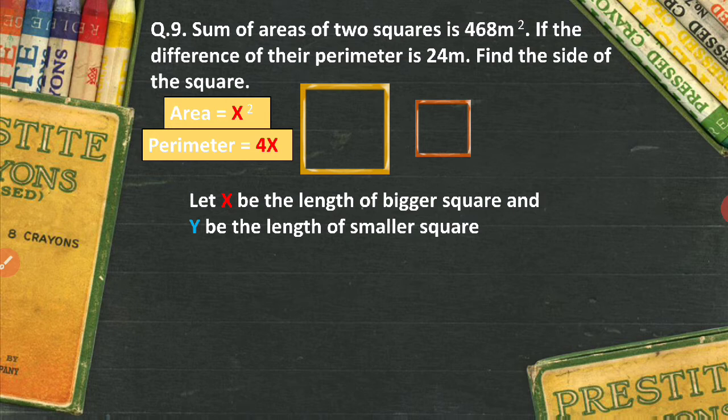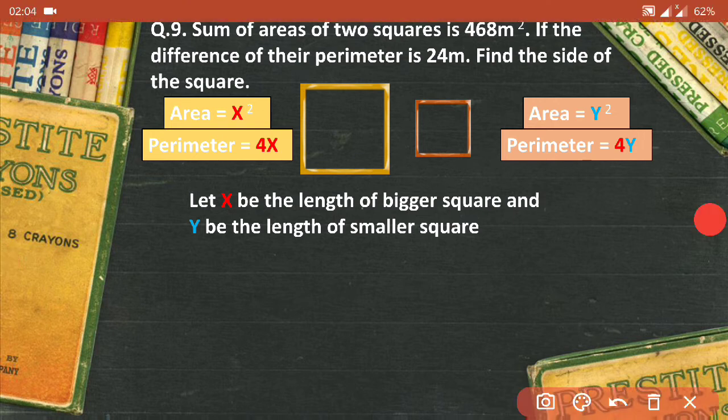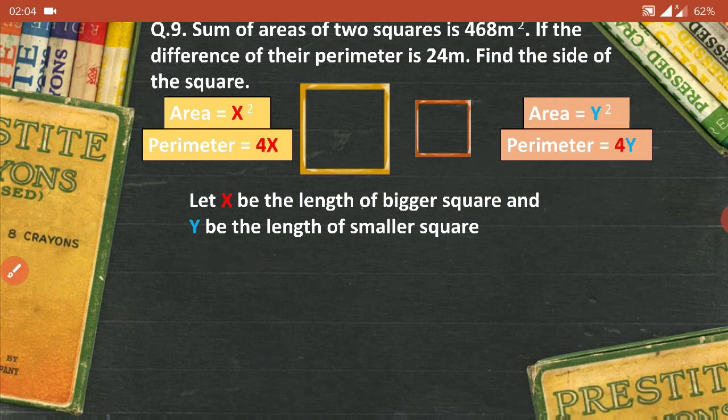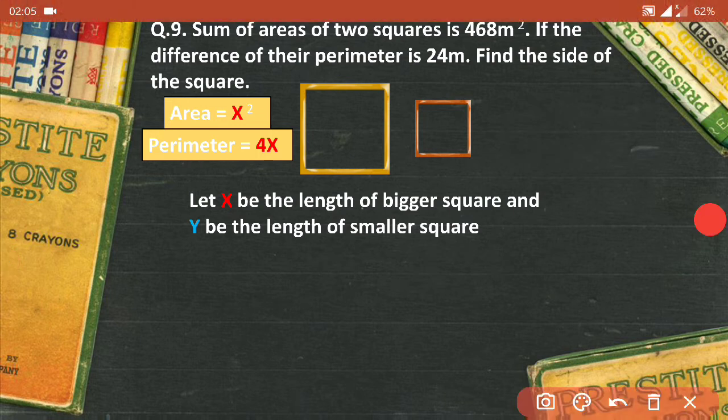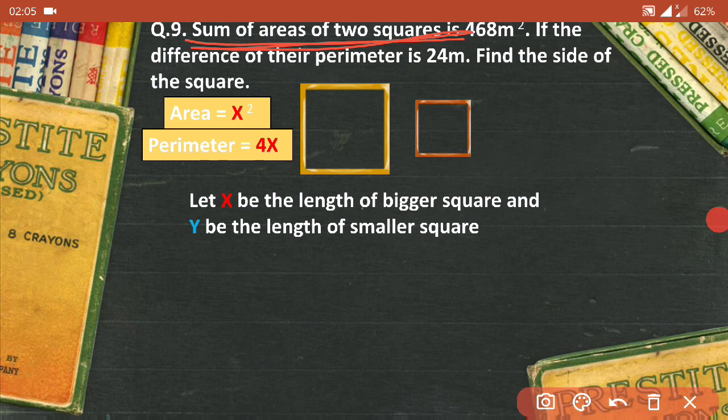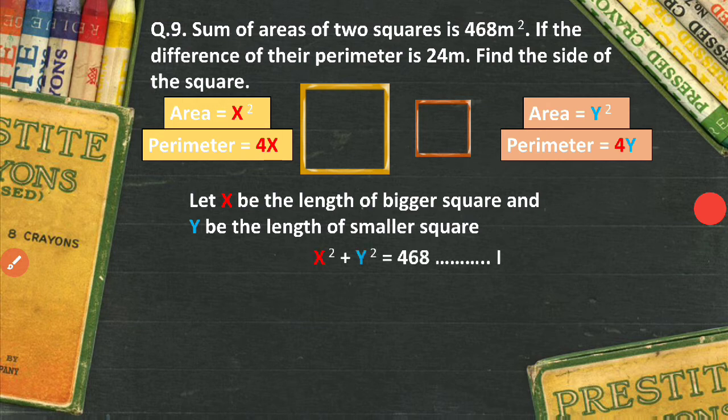For the smallest square, area will be y square because the length of the smaller square is y, and the perimeter will be 4y. Now, they have given in the question that sum of the areas of two squares is 468, right? So x² plus y² = 468. This is my first equation.